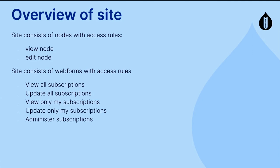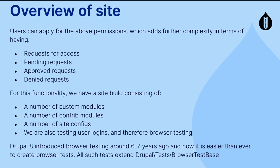A quick overview of the site: it consists of nodes with access to view and edit, and web forms also with access rules. We're using view all, update all, view only my, update only my, and administer subscriptions. Users can apply to other users for permissions to access, so we have requests for access, pending requests, approved requests, and denied requests. The site has a number of custom modules, contrib modules, site configs, and requires user logins — therefore this is browser testing.